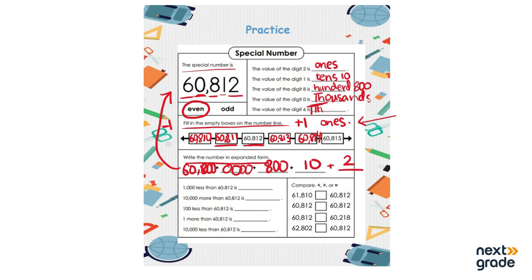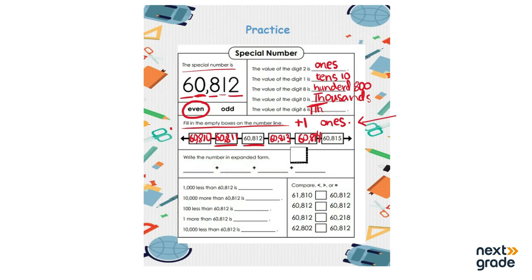Remember, if there is a zero you don't need to mention it in the expanded form. So we write it again correctly as: 60,000 + 800 + 10 + 2. Always remember this value. When writing the number back in standard form, be careful not to miss any place — if there is no digit at the tens place, write zero there.